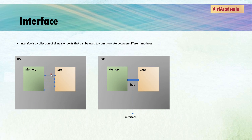Rather than declaring many ports and signals at each hierarchy level and connecting them as in the traditional approach, you can just declare the signals in one interface and declare a port of an interface type. When connected to an interface, it automatically makes all the individual connections for you.